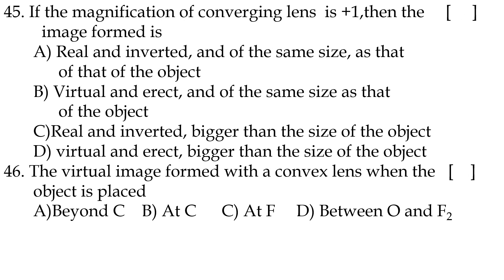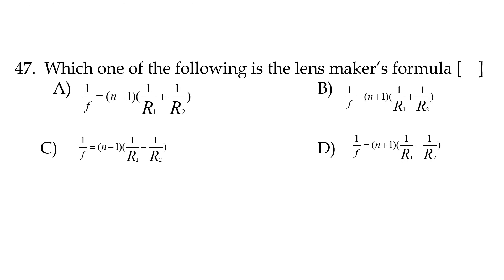Forty-fifth question: if the magnification of a converging lens is +1, the image formed is option B — virtual, erect, and of the same size as the object. Plus indicates a virtual image which is always erect; one indicates equal size. Forty-sixth question: the virtual image formed with a convex lens is when the object is placed option D — between O (optic center) and F2 (focus).